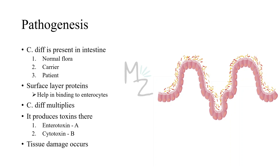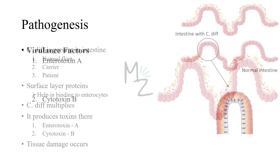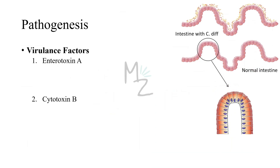When C. difficile multiplies and grows beyond normal numbers, it produces toxins — enterotoxin A and cytotoxin B — and these toxins cause tissue damage. Both toxins are the key virulence factors of this organism.